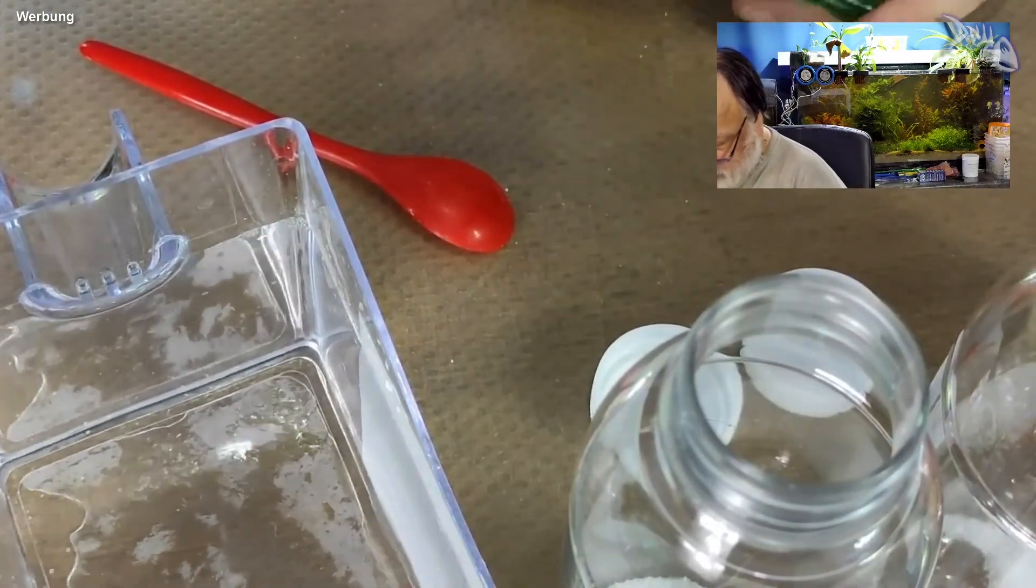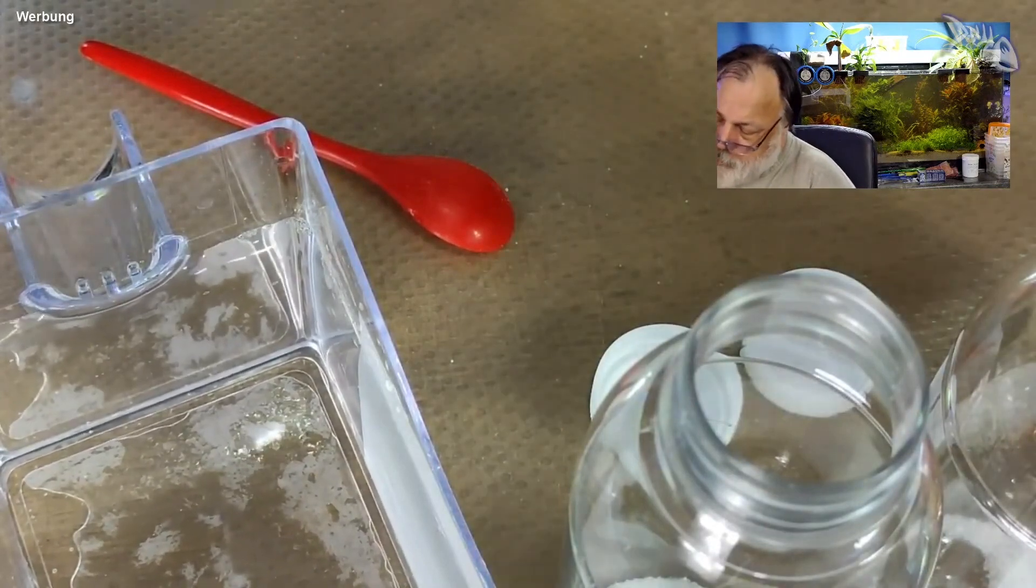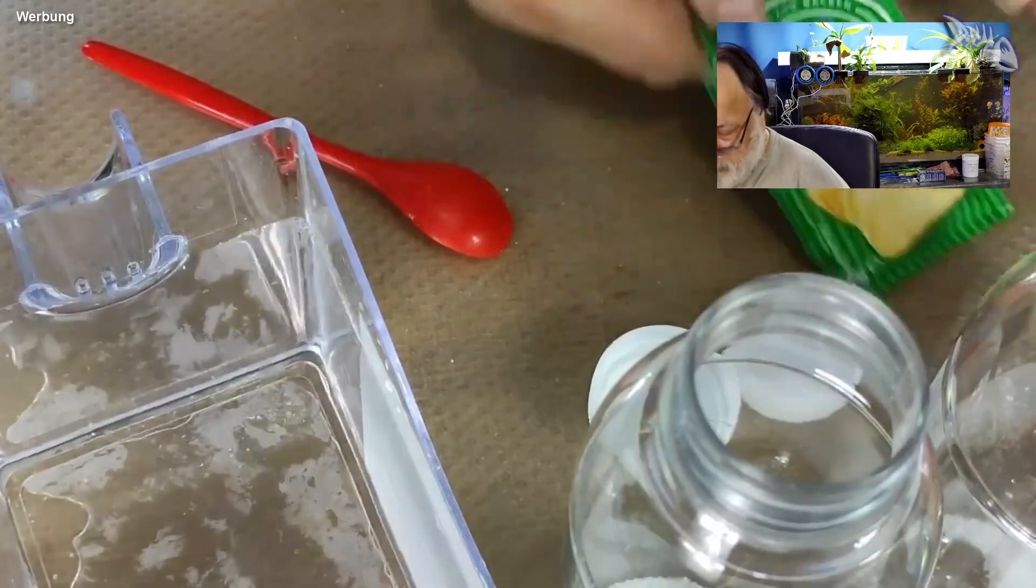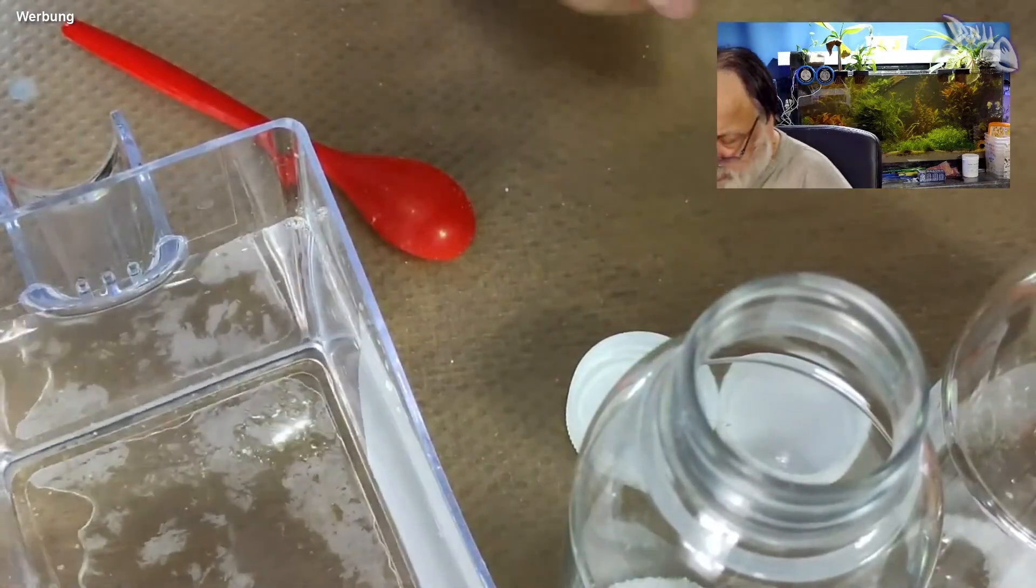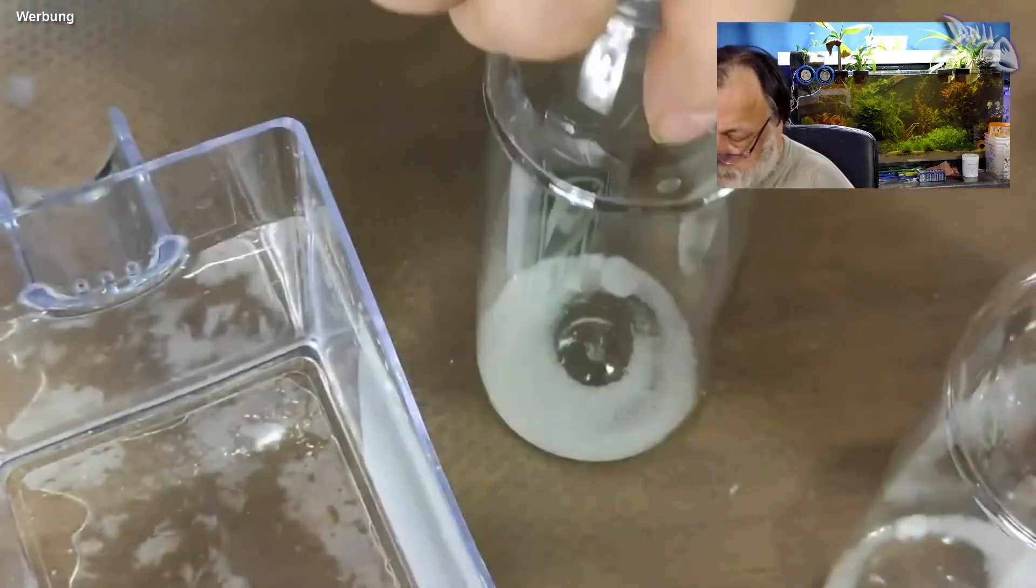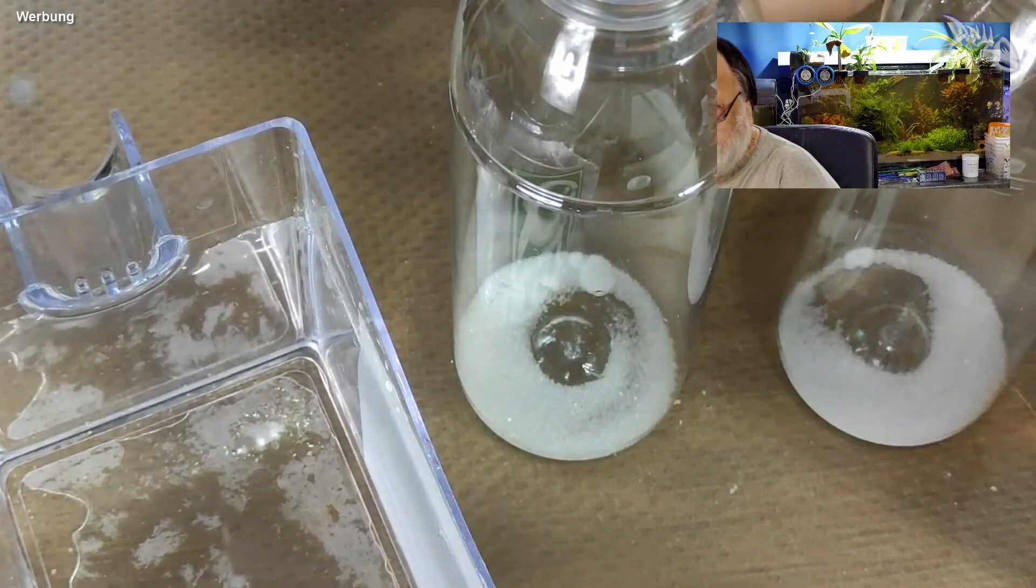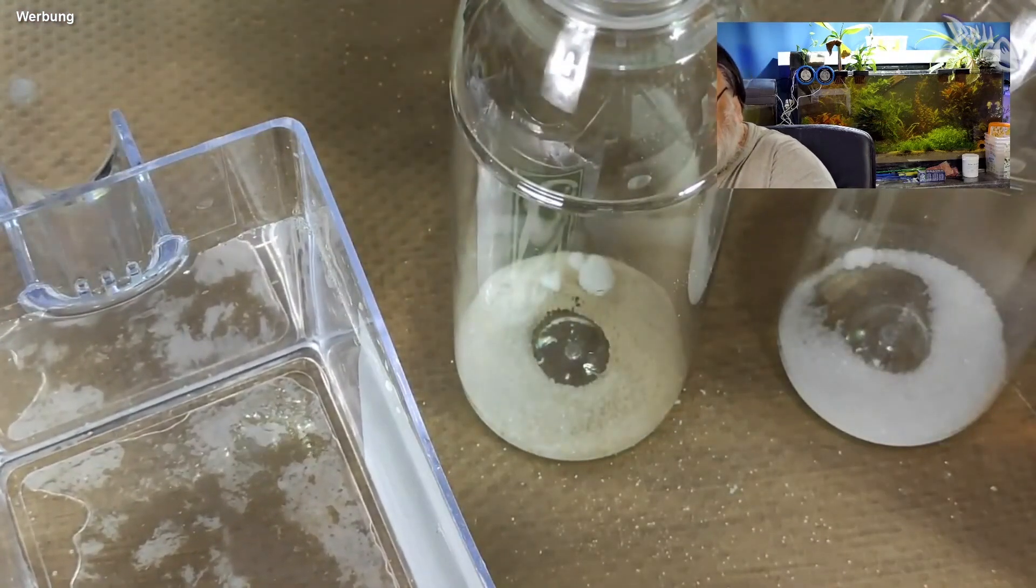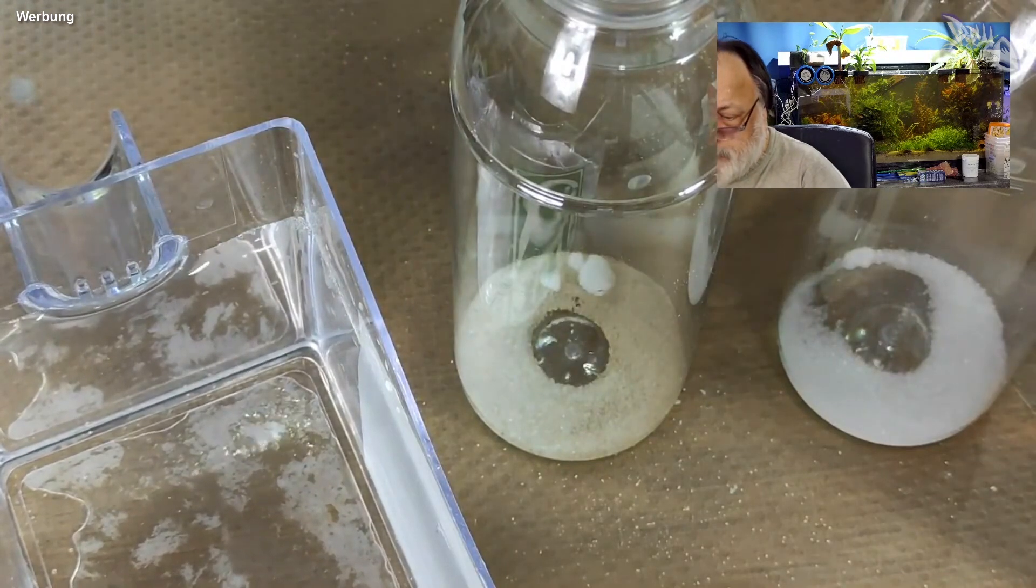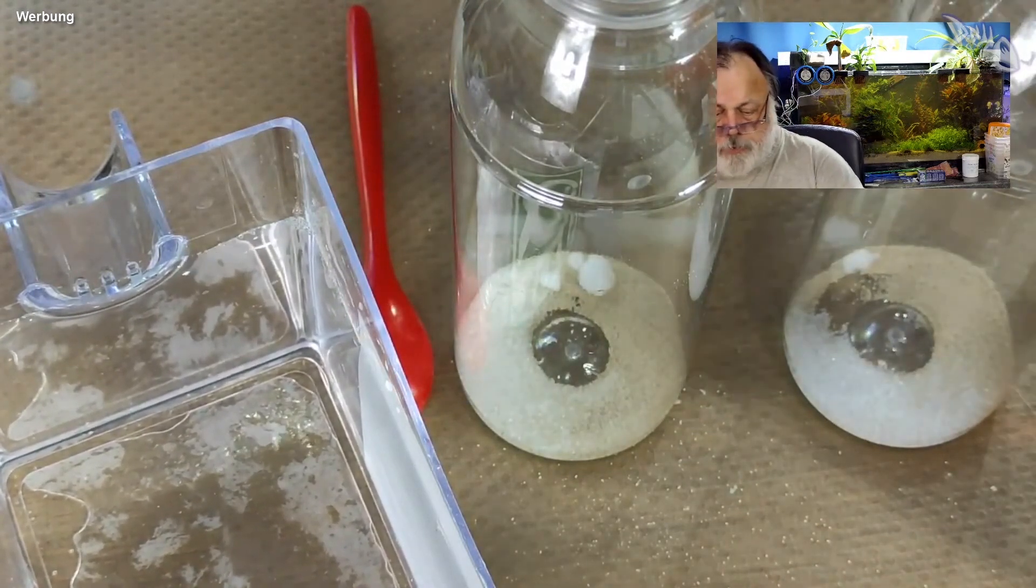Jetzt braucht man ein bisschen Hefe. Da braucht man so viel von. Ein bisschen schütteln. Ich nehme ganz normale Trockenhefe, so eine ganz billige, das reicht. Einen halben Teelöffel Hefe und gebe die da mit rein. Schön wieder verschließen.